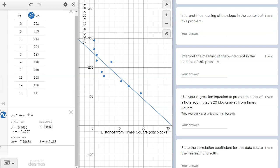Next up, we're asked to interpret the meaning of the slope in the context of the problem. This is where those axis labels on your graph could come in handy. Our slope is the change in y divided by the change in x. So in words, that is the change in the cost of the hotel room as the distance from Times Square changes.